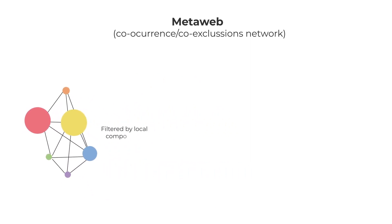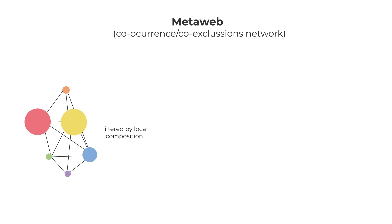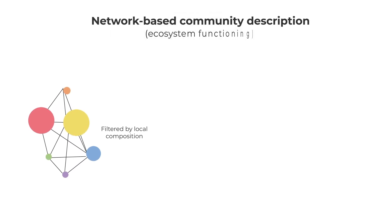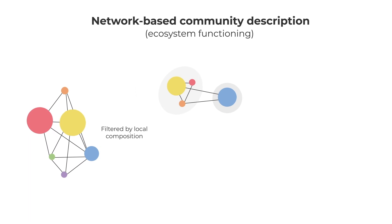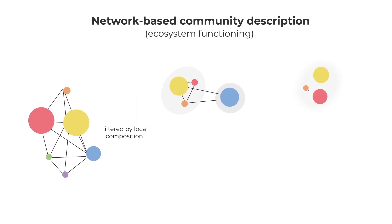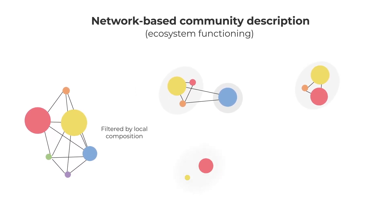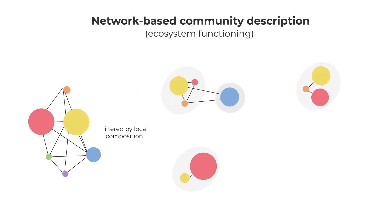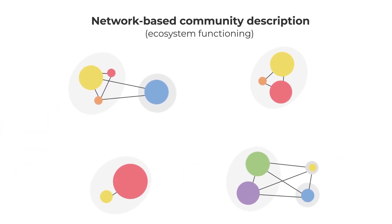Learning from the co-occurrence patterns in the MetaWeb model, we then describe the structure of individual samples by considering those taxa detected in the local communities and analyzing their network properties.